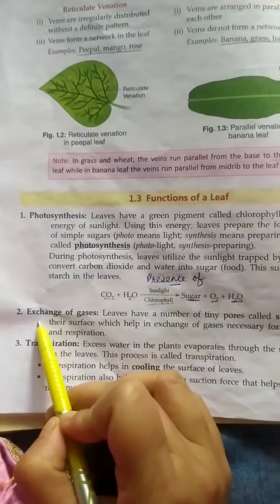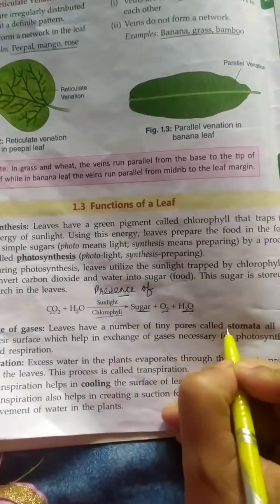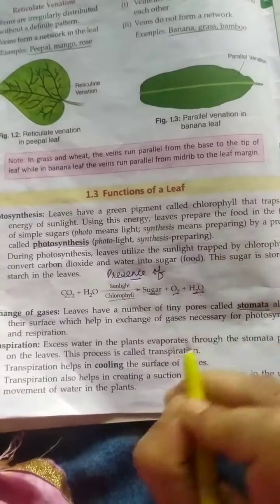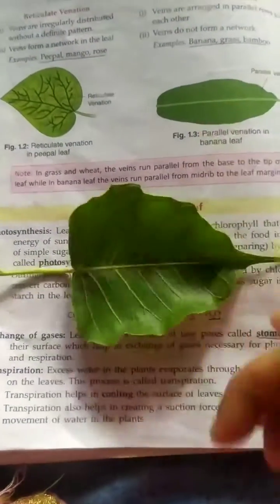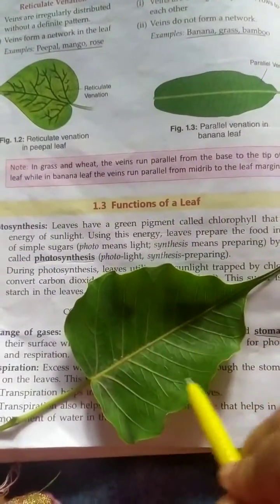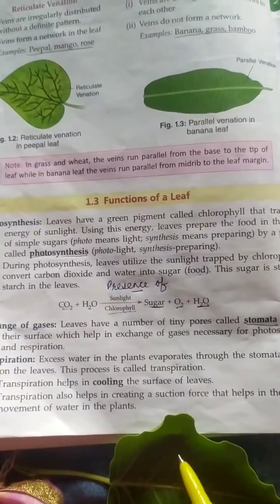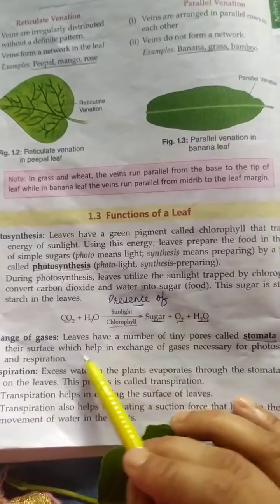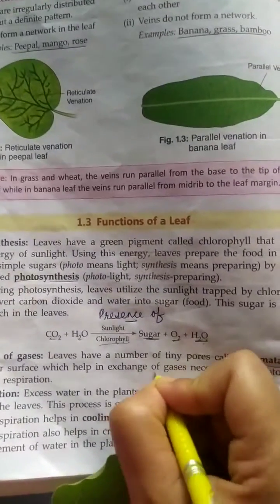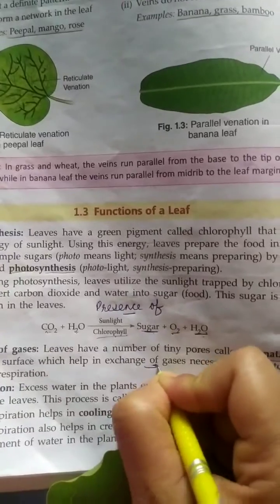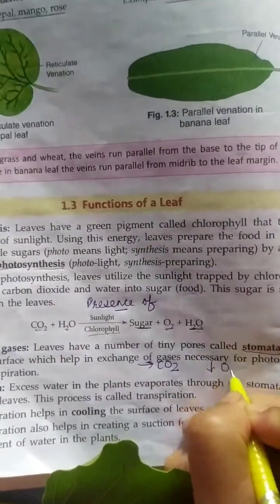The second function of leaves is the exchange of gases. Leaves have small pores or holes known as stomata on their surfaces. Through the stomata, the exchange of gases takes place — plants take in carbon dioxide and release oxygen.